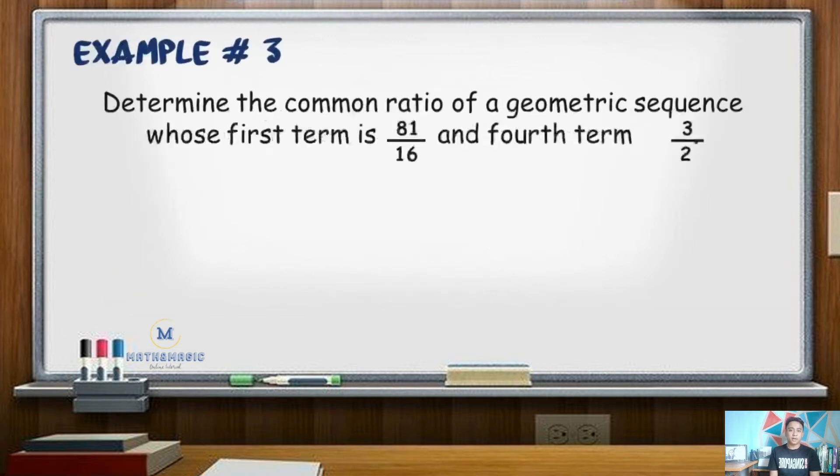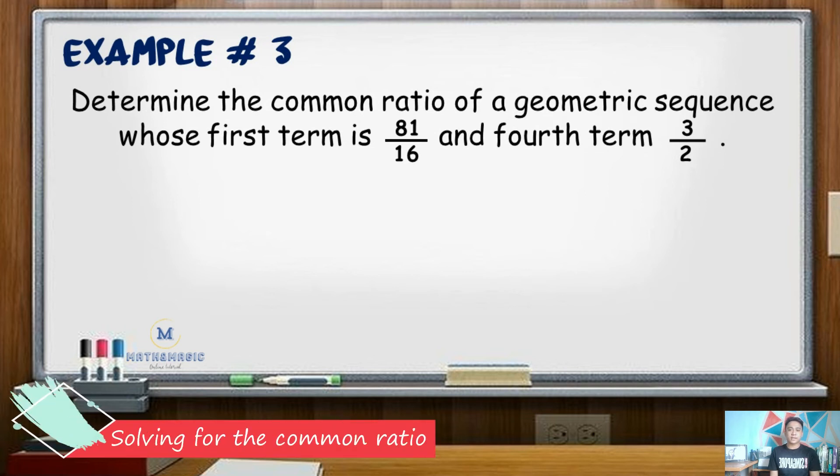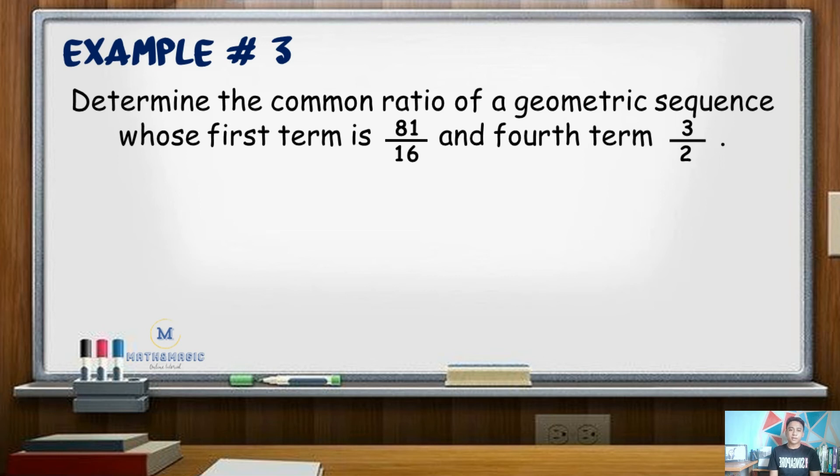Third example, determine the common ratio of a geometric sequence whose first term is 81 over 16 and fourth term is 3 over 2. In this example, the first term is already given: a sub 1 is 81 over 16. Fourth term, or a sub 4, is 3 over 2. n value is 4. Using the same formula, the equation now becomes 3 over 2 equals 81 over 16 times r raised to 4 minus 1 or r cubed.